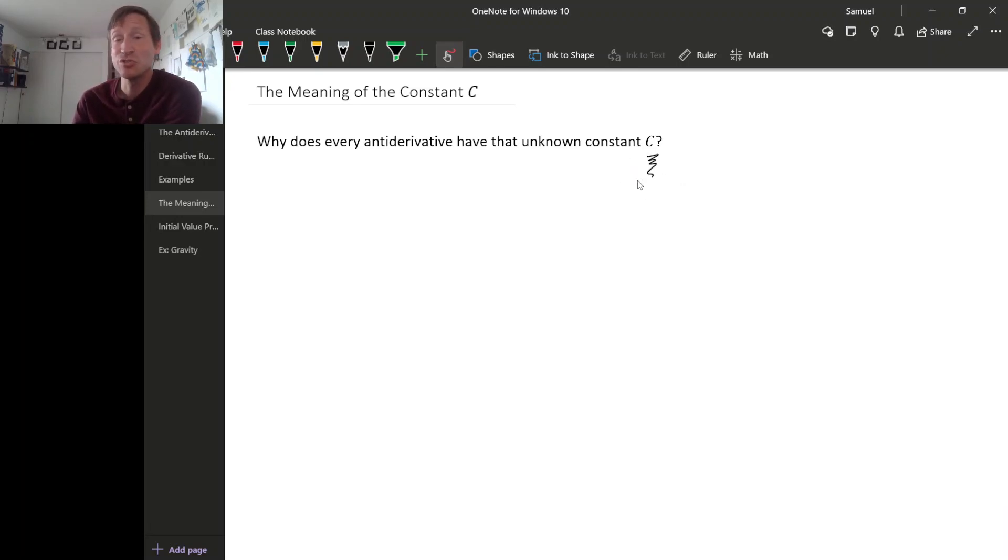We sort of understand procedurally why an antiderivative can have a plus C, because if you check your antiderivative, the derivative of this plus C is going to be zero. But it's a little trickier to understand conceptually why this plus C appears.